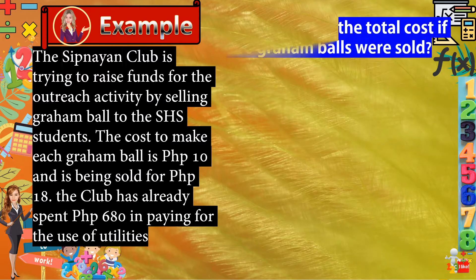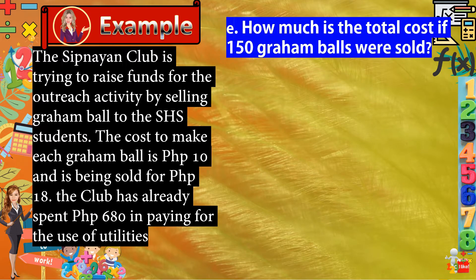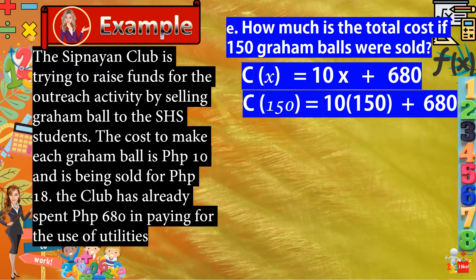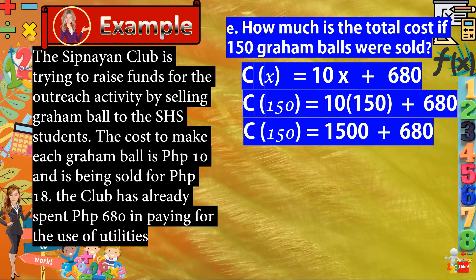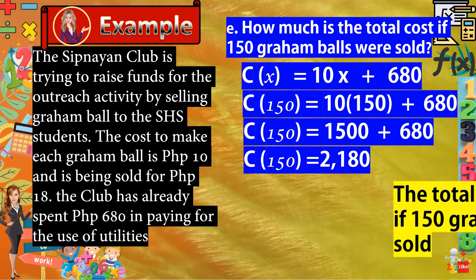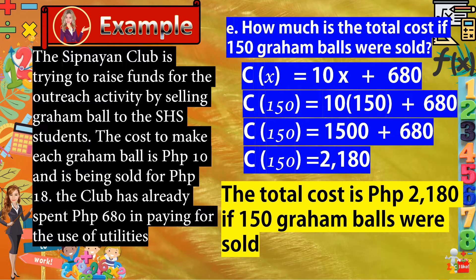Next, how much is the total cost if 150 Graham Balls were sold? Here, we ask for the total cost. Therefore, we have to use the cost function. C(x) is equal to 10x plus 680. Since we are talking about 150 Graham Balls, let x be 150. We need to substitute 150 to x. C(x) is equal to 10 times 150 plus 680. Multiplying 10 to 150, the answer is 1500. Plus 680 gives us 2180. The meaning of this is that the total cost is 2180 if 150 Graham Balls were sold.